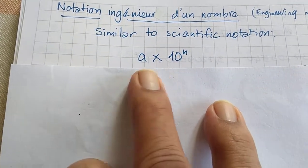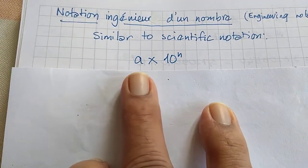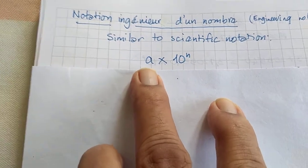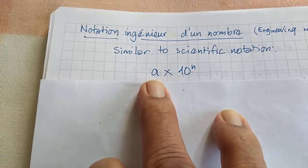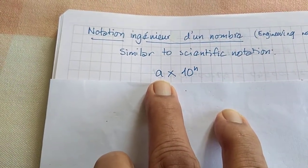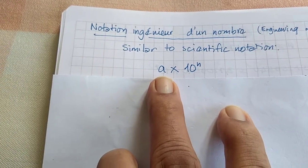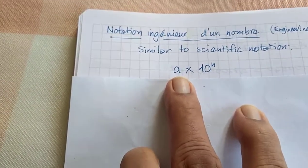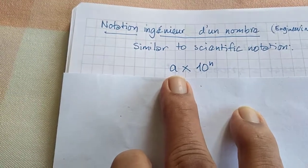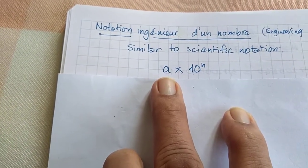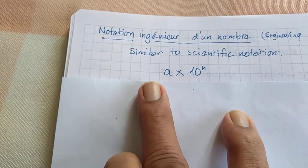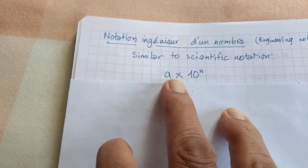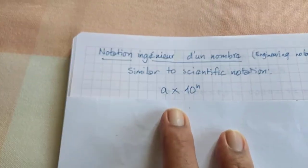We had done this for scientific notation. Briefly, you have to write a as a decimal number with only one digit before the decimal point, and that digit cannot be 0. And then you adjust n accordingly so that you get the number.